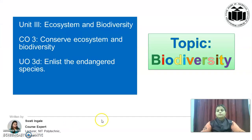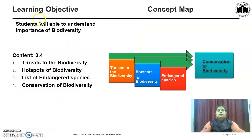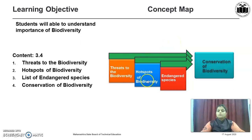In today's video, we are going to discuss the topic Biodiversity from Unit 3, Ecosystem and Biodiversity. Course Outcome: Conserve Ecosystem and Biodiversity. Unit Outcome: Enlist the Endangered Species. After viewing this video, students will be able to understand the importance of Biodiversity. Today we are going to cover Threats to the Biodiversity, Hotspots of Biodiversity, Different Endangered Species and Conservation of Biodiversity.